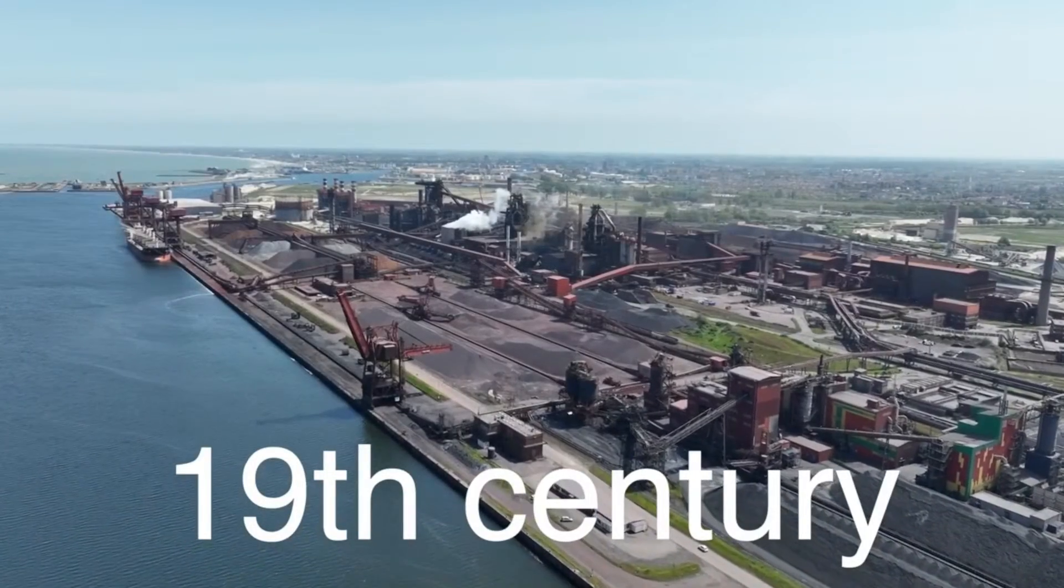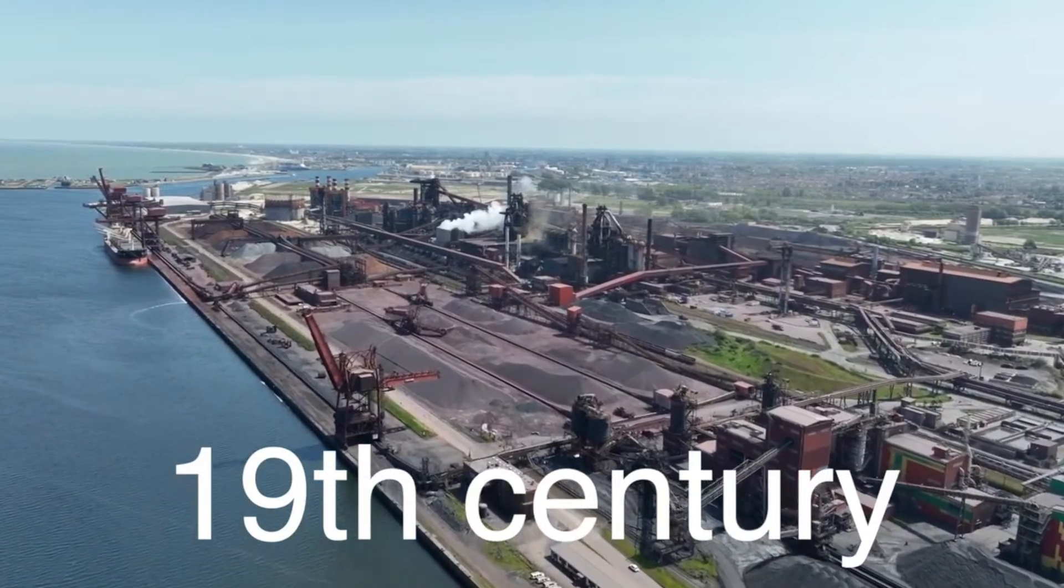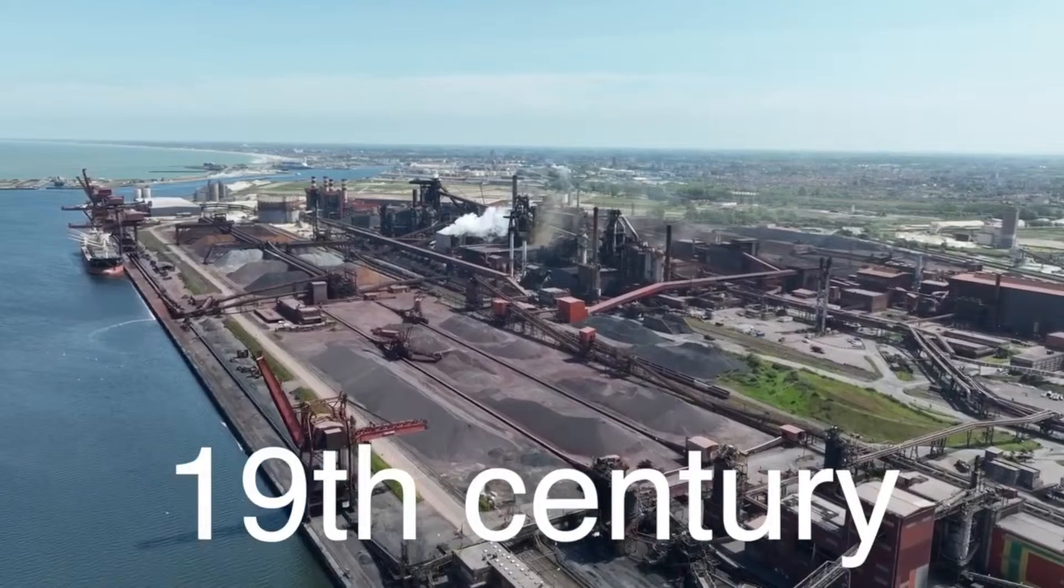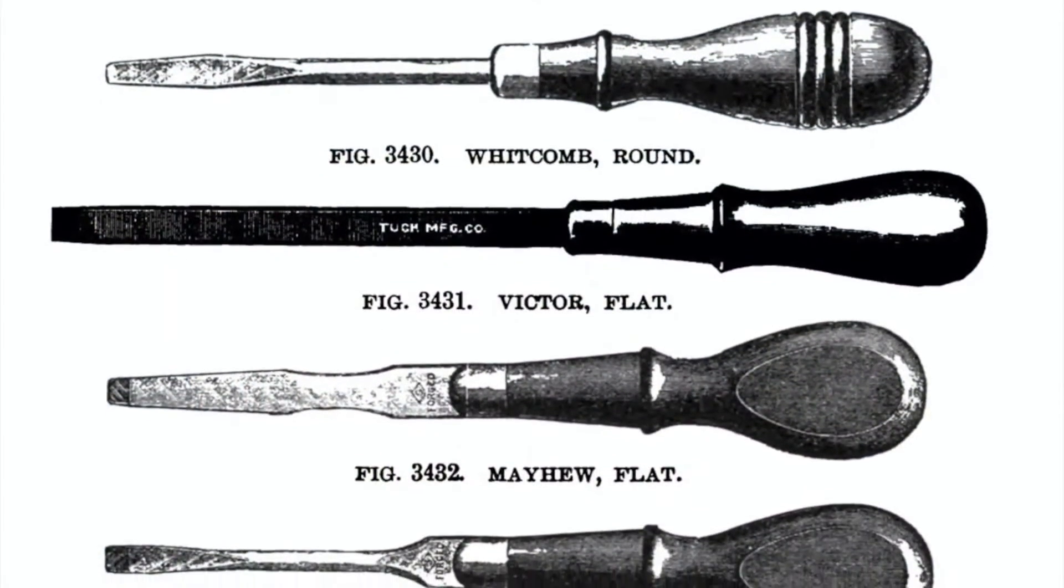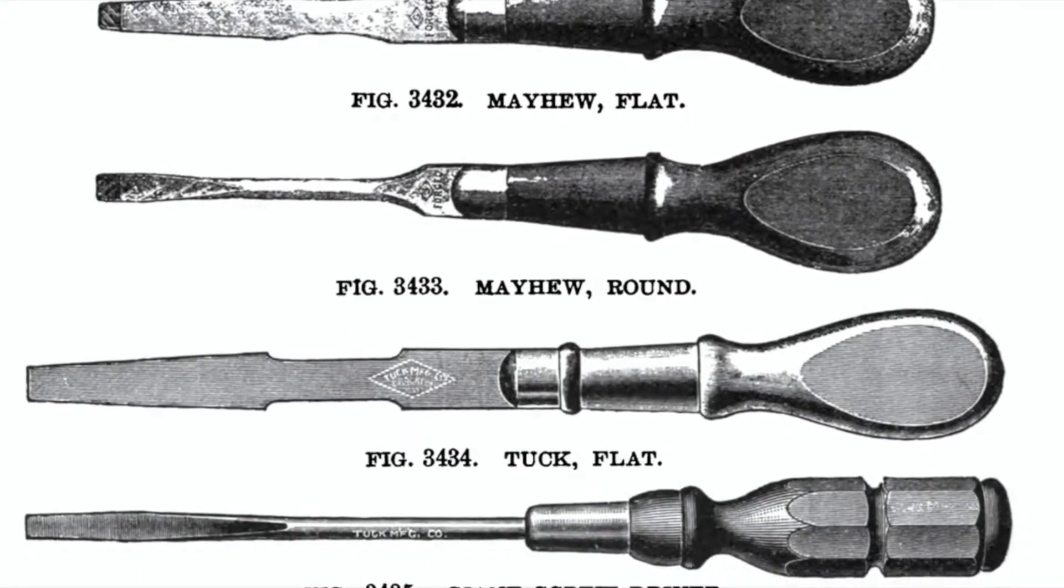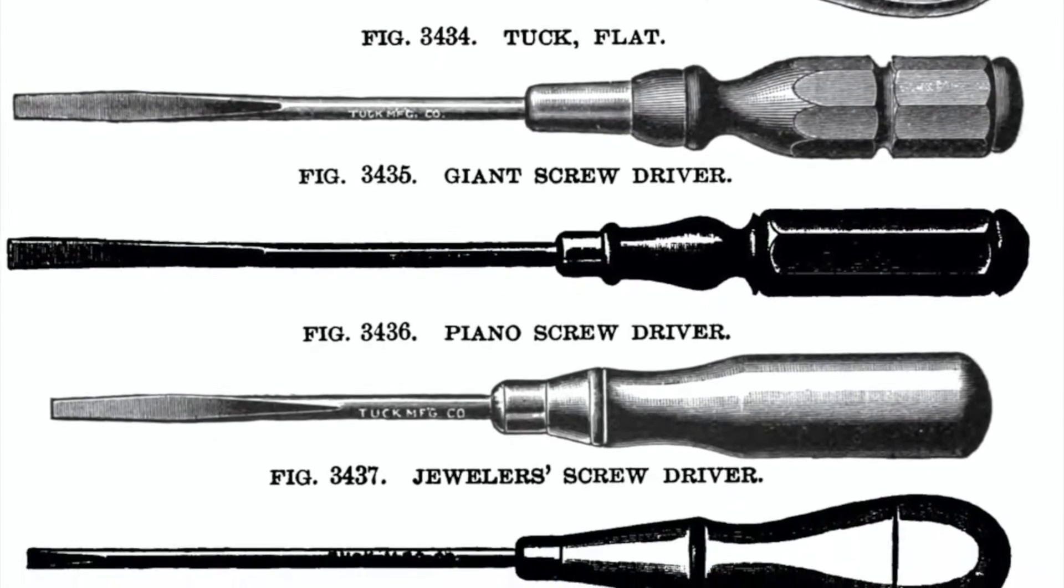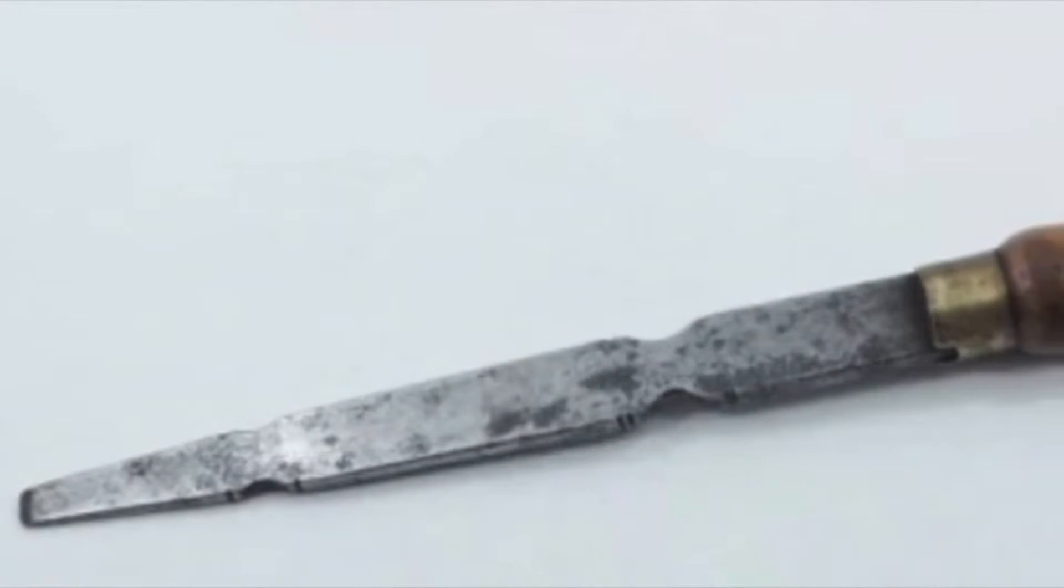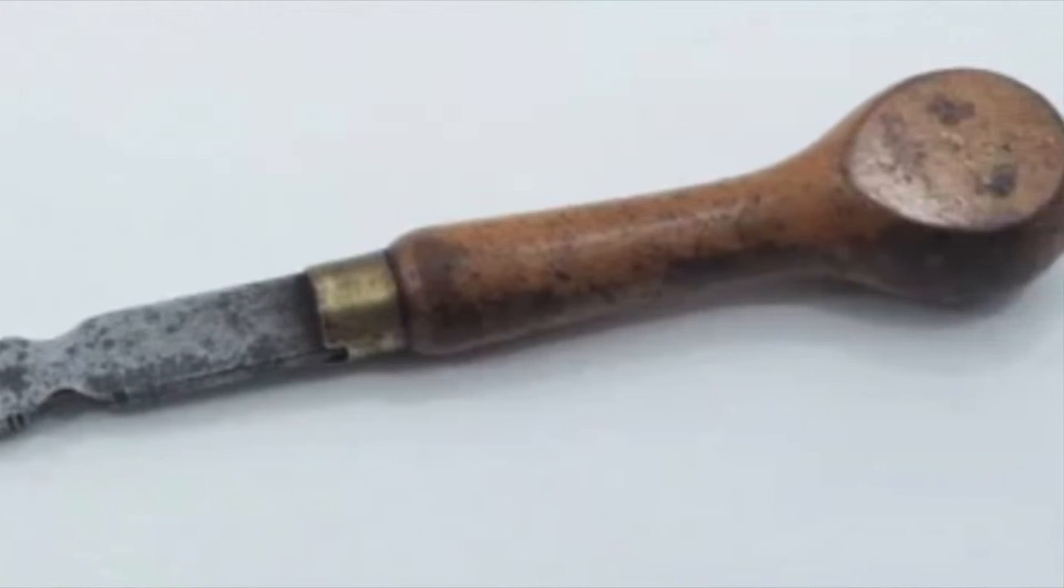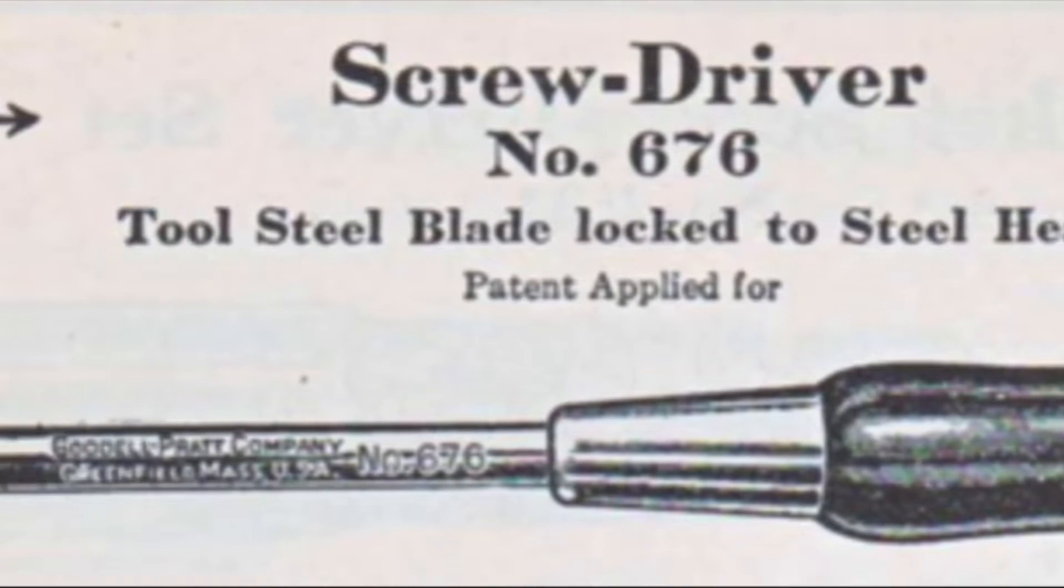The 19th century brought further advancements with the rise of industrialization. Factories churned out vast quantities of goods and the need for standardized tools became more apparent. During this period, the flathead screwdriver underwent refinements to improve its functionality and ease of use. Toolmakers experimented with different handle designs, materials, and manufacturing techniques to produce screwdrivers that were not only effective but also comfortable to use. Wooden handles were common, but the introduction of metal handles and later plastic ones improved durability and user experience.